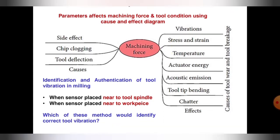The identification and authentication of tool vibration in milling machine is based on when sensor is placed near to tool spindle versus near to workpiece. These are the cause and effects. Which of these methods would identify the correct tool vibrations?